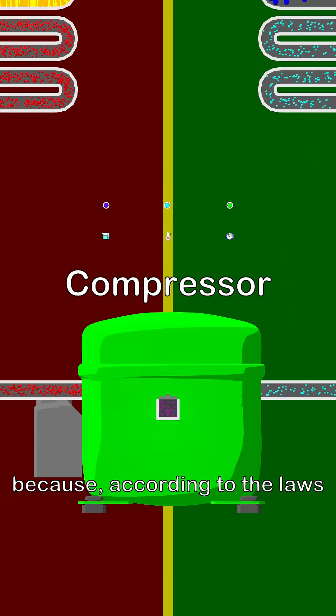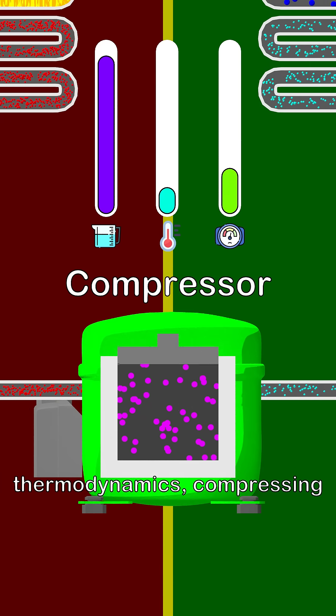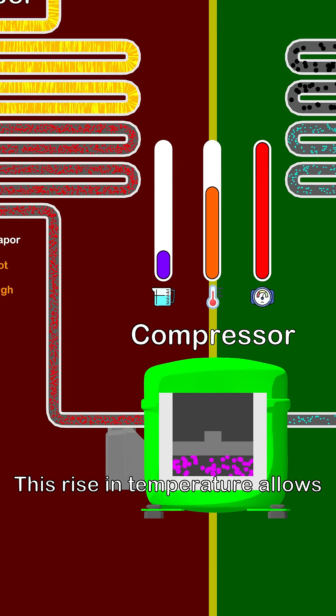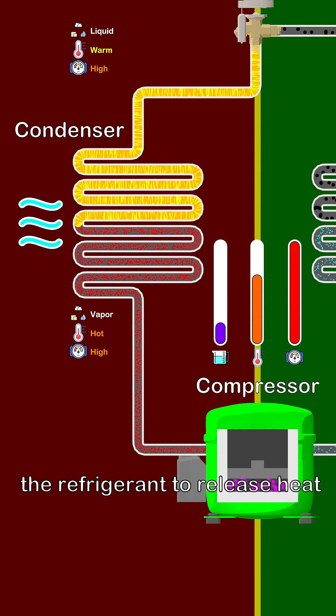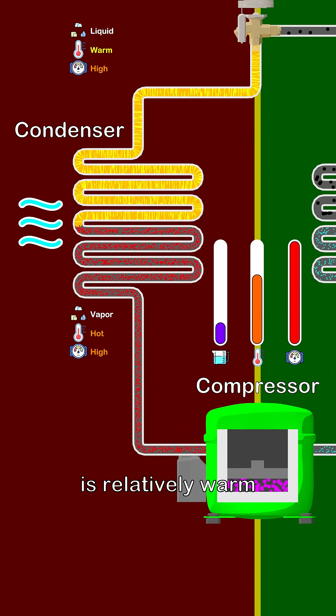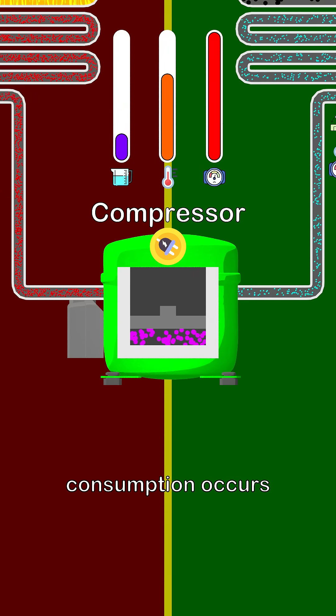The compressor is vital because, according to the laws of thermodynamics, compressing a gas always increases both its pressure and temperature. This rise in temperature allows the refrigerant to release heat effectively in the condenser, even when the surrounding air is relatively warm. This is where most of the refrigerator's energy consumption occurs.